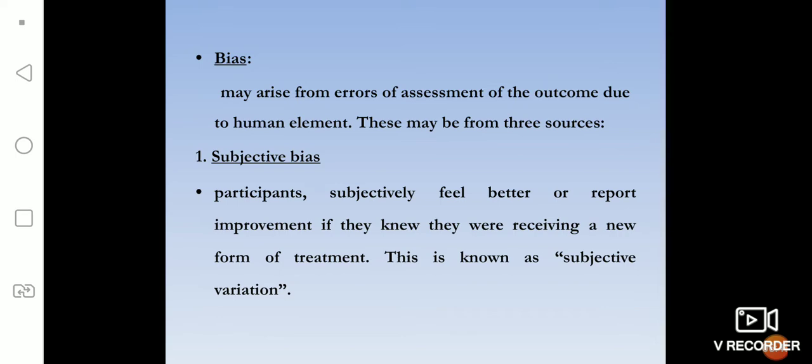Now we come to bias. Similar to analytical studies, bias may arise from errors of assessment of the outcome due to the human element. There are three sources. First is subjective bias: participants subjectively feel better or report improvement if they know they have been given a new drug or new form of treatment — subconsciously feeling they are doing well.